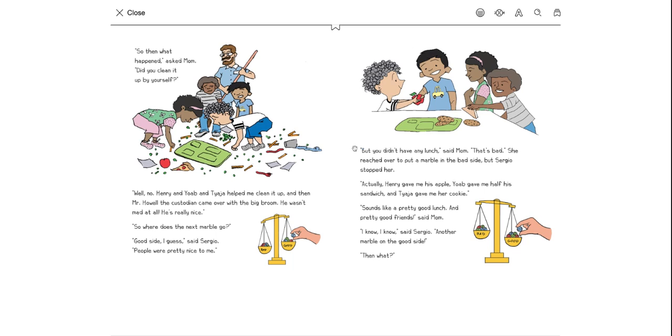But you didn't have any lunch, said mom. That's bad. She reached over to put a marble on the bad side, but Sergio stopped her. Actually, Henry gave me an apple. Yab gave me half his sandwich. And Ty Yuck gave me her cookie. Sounds like a pretty good lunch. And pretty good friends, said mom. I know, I know, said Sergio. Another marble on the good side.